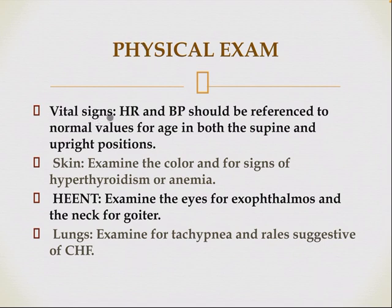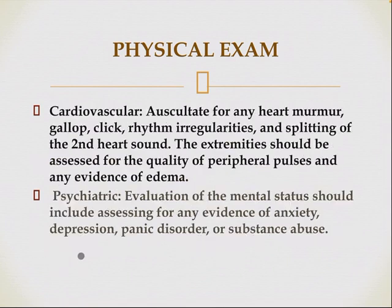Physical examination: Vital signs — heart rate and blood pressure should be referenced to normal values for age, both in the supine and upright position. Skin: examine the color and for signs of hyperthyroidism or anemia. Also examine the eyes for exophthalmos and the neck for goiter. Lungs: examine for tachypnea and crackles suggestive of congestive heart failure. Cardiovascular: auscultate for any heart murmur, gallop, click, rhythm irregularity, and splitting of the second heart sound.